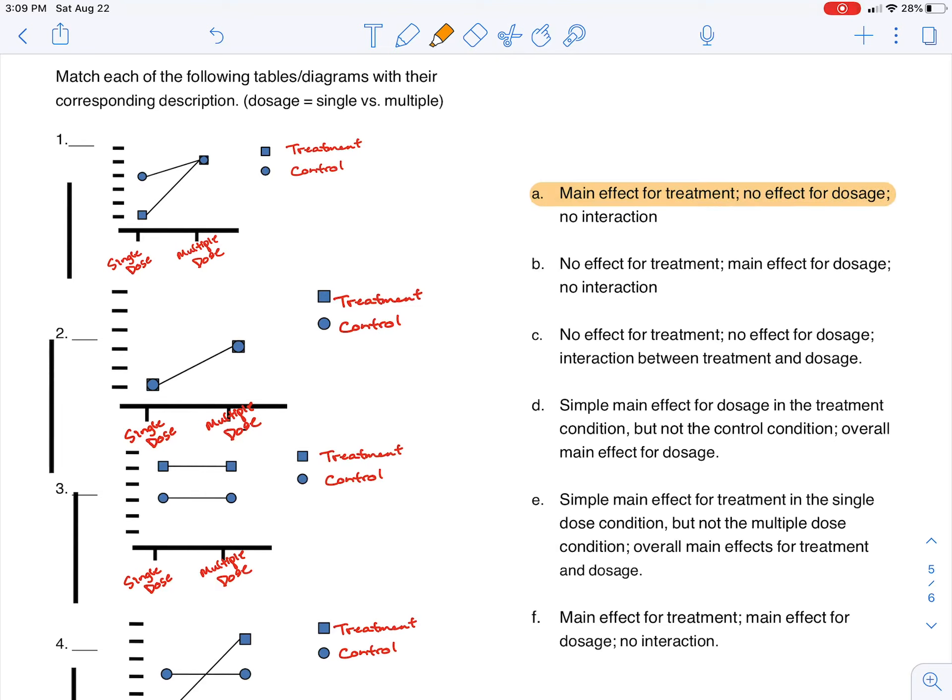Okay, on A, we have a main effect for treatment, no effect for dosage, and no interaction. Well, let's start with a great rule-out one, which is the no interaction.